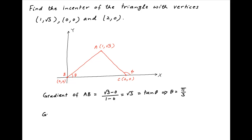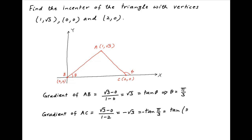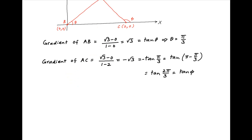Similarly, the gradient of line AC is equal to (√3 − 0) / (1 − 2) = −√3. This equals −tan(π/3), which can be written as tan(π − π/3) or tan(2π/3). Since this equals tan φ, the gradient of line AC, therefore the angle φ = 2π/3.